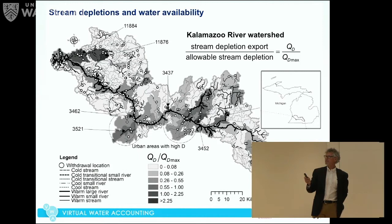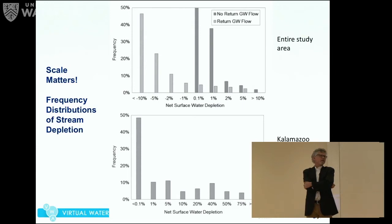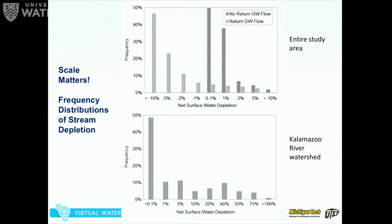Scale matters here. This frequency distribution for stream depletion across the whole study area shows that most depletions are very small — very few are substantially larger than 10%. But when we go to a single watershed like the Kalamazoo River, we have some depletions reaching 50% or larger. When we look in aggregate it looks like we're fine, but at smaller scales we see substantial problems.